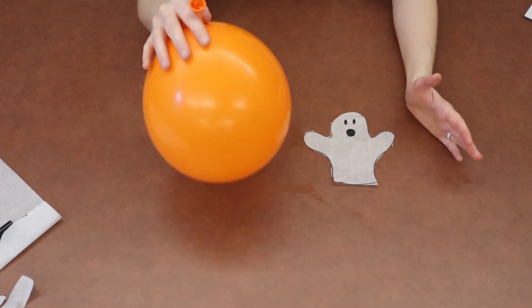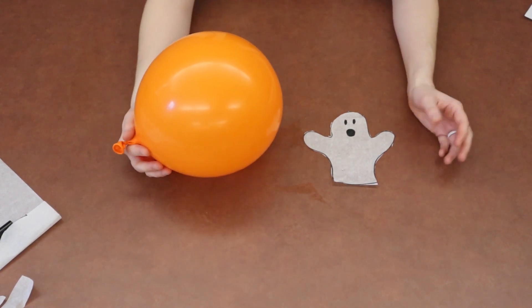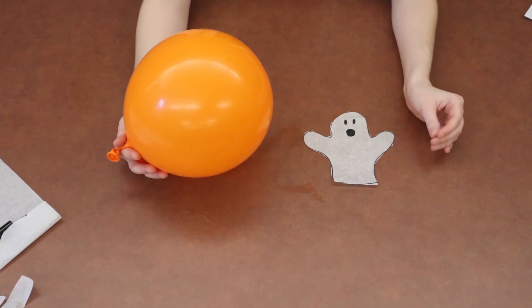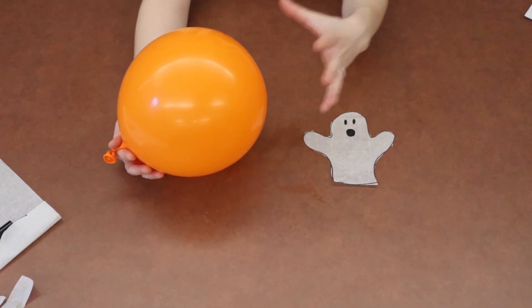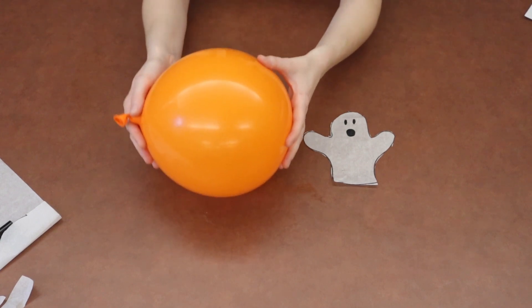And what we're doing when we're doing that rubbing on our hair or the carpet is we are stealing electrons from the carpet and we're putting them onto our balloon.